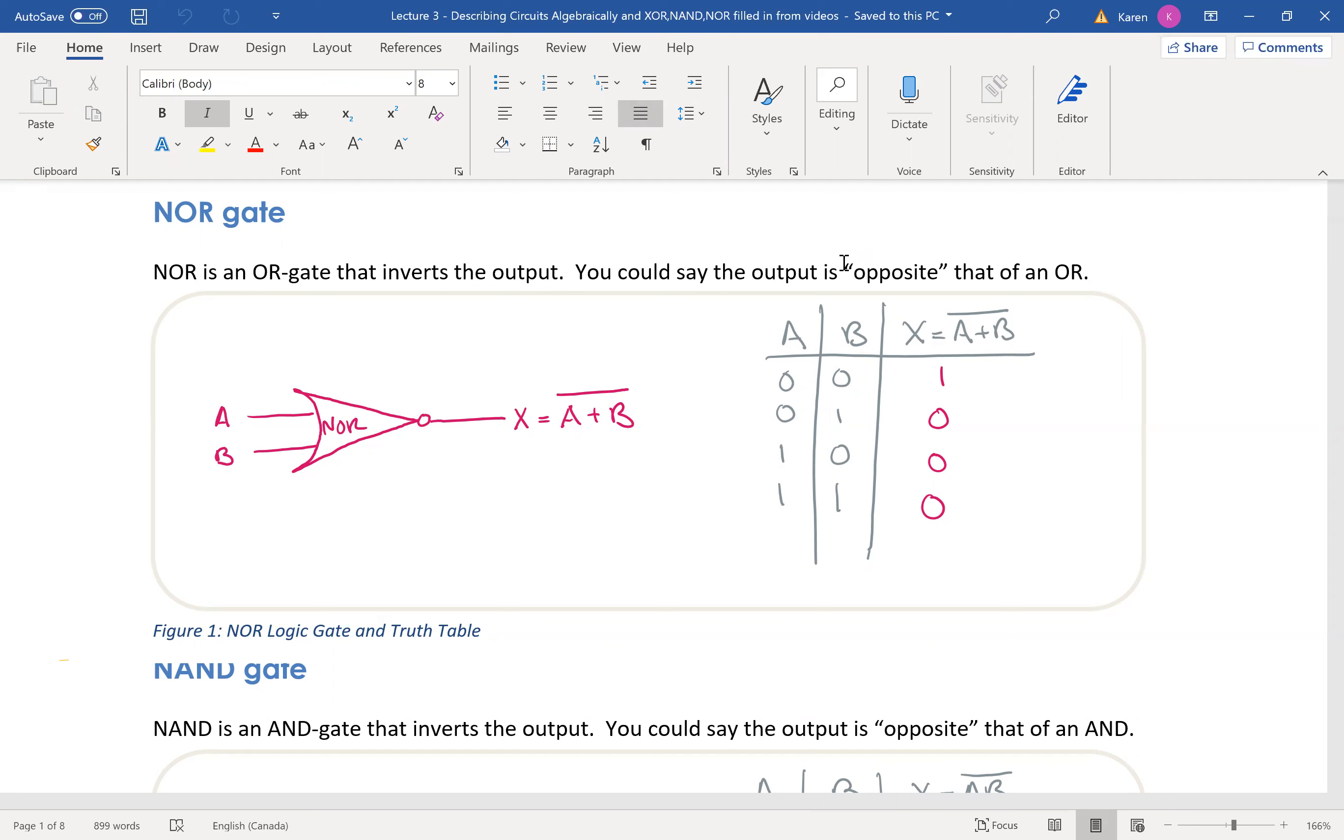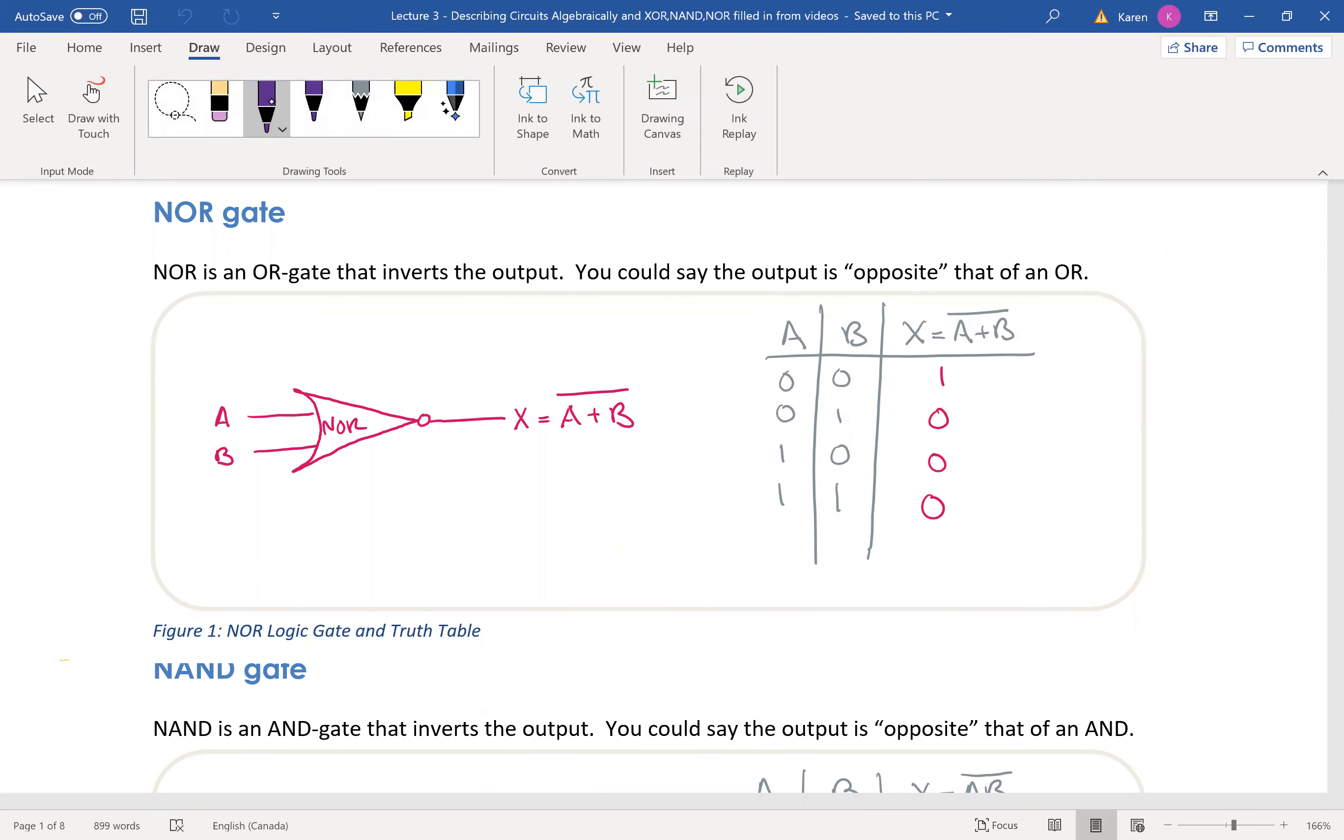A NOR gate is an OR gate that inverts at the output. So you could also draw it. So I have a picture of it here, what it commonly looks like in the logic circuit format. But you could also draw it like this. It's essentially an OR gate with an inverter. So that means the same thing.